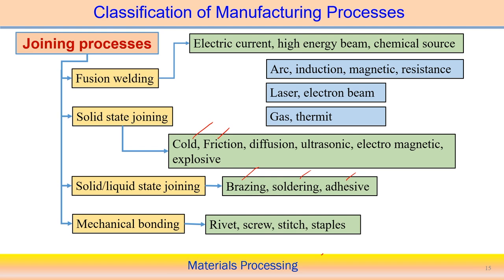Mechanical bonding is another joining process where riveting, screws, bolts and nuts, stitches, and staples are used. There is no need to melt the material and no deformation or solid-liquid state joining involved. The joint can be either permanent or semi-permanent.